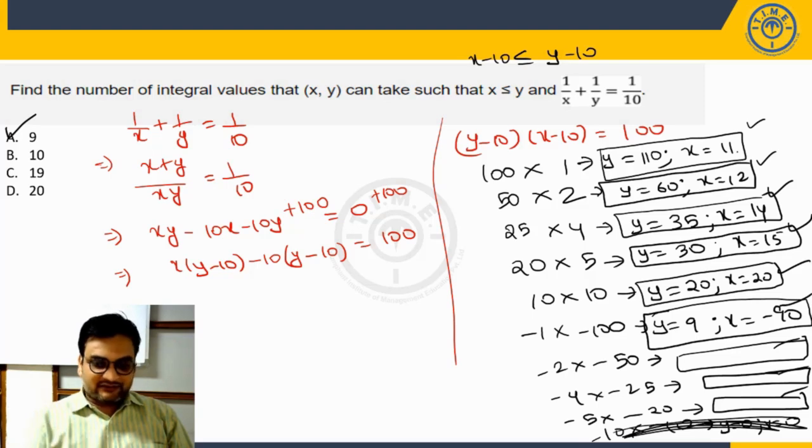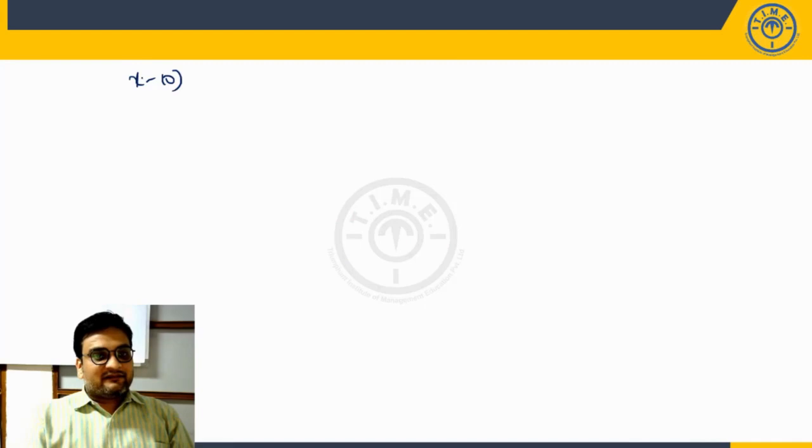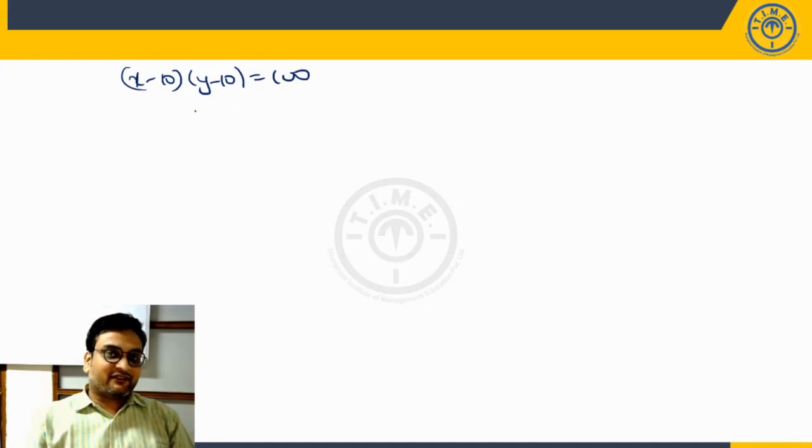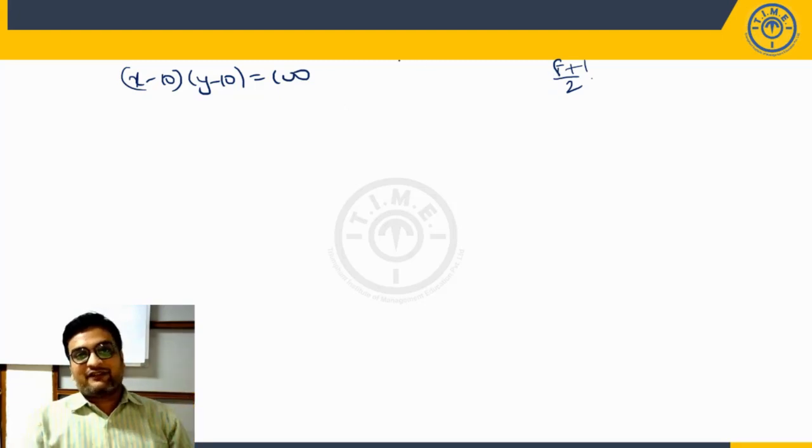Just a small thought here. Finally, I get the equation like this: x minus 10 into y minus 10 is 100. Basically product of two integers is becoming 100. In how many ways can we write a number as product of two factors? Let us assume them to be positive. Can I say the answer for that is nothing but simply f by 2. And since this number is a perfect square itself, it will be that f plus 1 by 2 or f minus 1 by 2. I am using the concept of numbers here. Number of factors of 100 is 2 square into 5 square. So number of factors will be 2 plus 1, 3 into 3, 9. This is 9. My number of ways will be 9 plus 1 by 2 which is 5 ways.